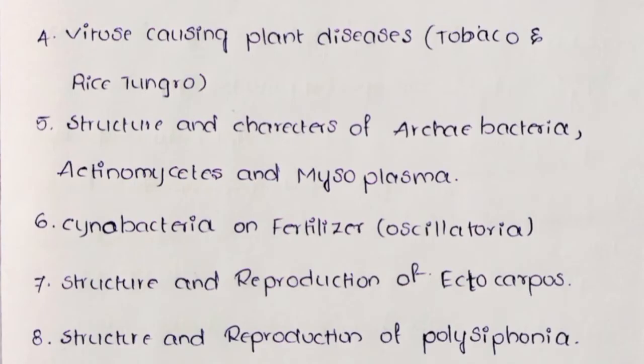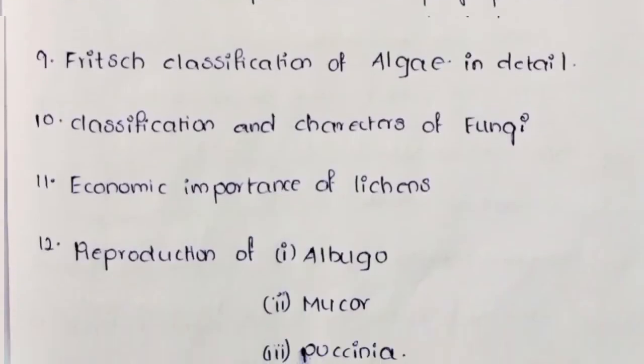Fifth: Structure and Characters of Archaebacteria, Actinomycetes, and Mycoplasma. Sixth: Cyanobacteria as Fertilizer — Oscillatoria. Seventh: Structure and Reproduction of Ectocarpus. Eighth: Structure and Reproduction of Polysiphonia.